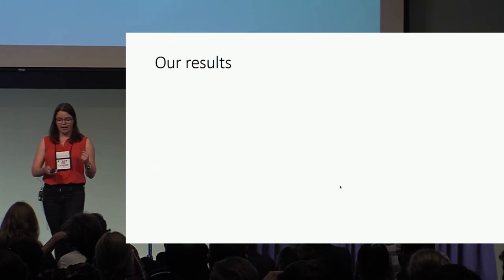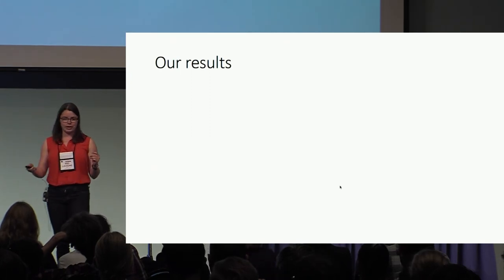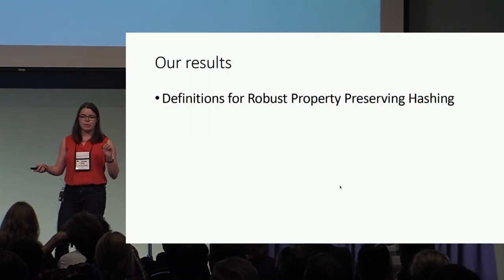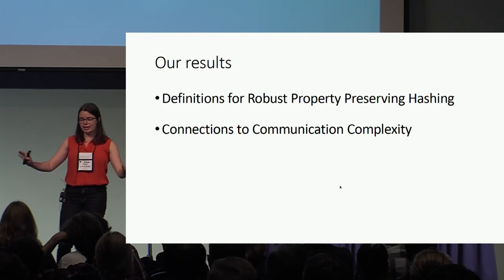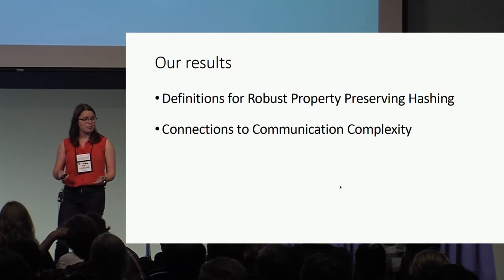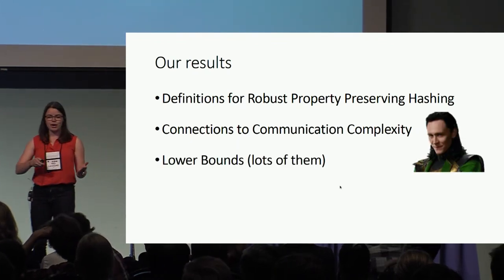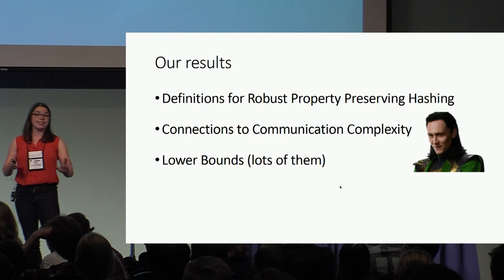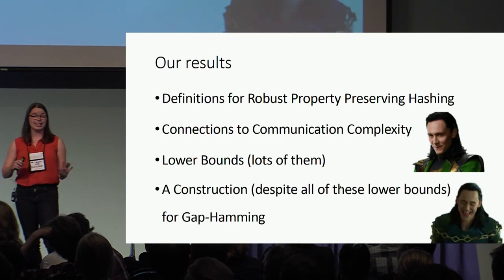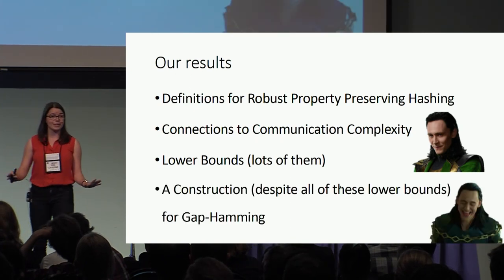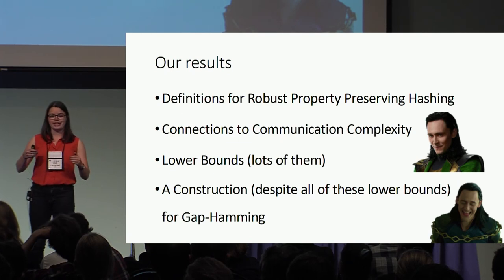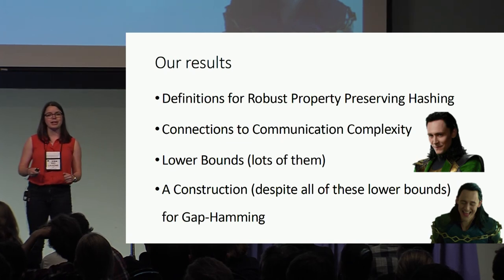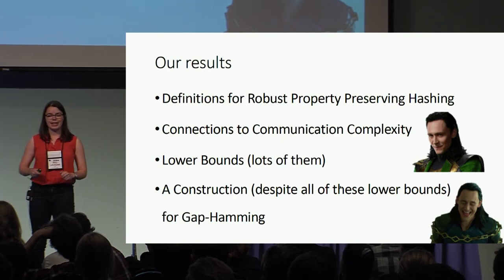To conclude, our results are as follows. We provide definitions for this new hashing idea. We make many connections to communication complexity. We find lots of lower bounds, and despite all of these lower bounds, we give a construction for the gap-Hamming predicate. Thank you.